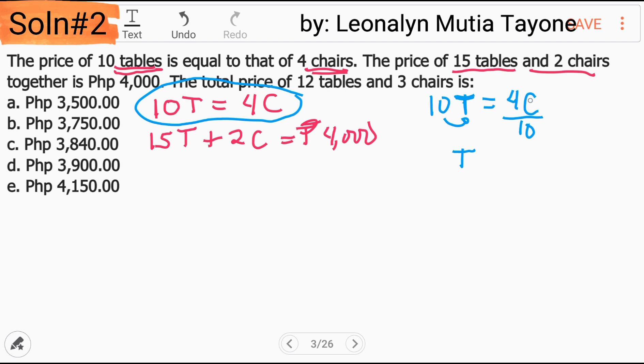T equals 4C over 10. Pero, isimplify natin yan by finding the greatest common factor which is 2. 4 divided by 2 and that is 2. 10 divided by 2 and this is 5. So 2C over 5. Therefore, ito ay 15 tapos yung value ni T ay 2C over 5. Kopyahin si 2C at itong 4,000.